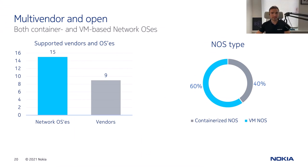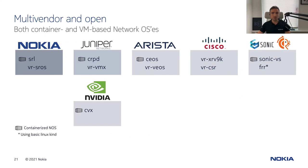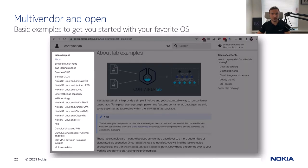So far we've been working with containerized network operating systems. But ContainerLab supports not only containerized systems but also traditional VM-based network OSs. Currently we count 9 different vendors and 15 different network operating systems that ContainerLab supports, with a split between containerized and VM-based network operating systems currently at a 60-40 ratio. This slide shows which vendors and their corresponding kinds are supported. To help you get started with your favorite network OS, you can go to the ContainerLab documentation site and choose the lab examples section, where you'll find examples for each supported operating system.